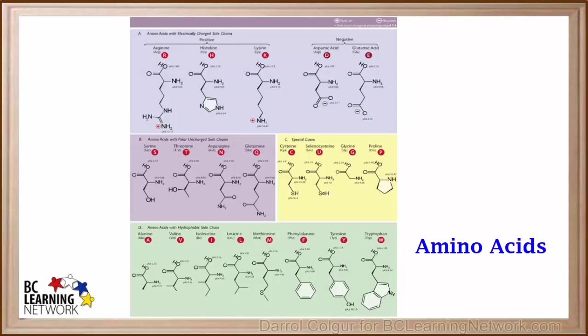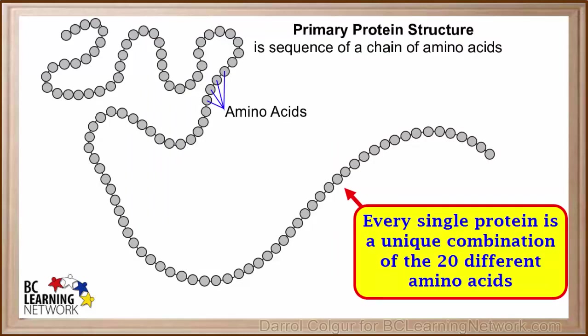Here is a diagram showing the structures of individual amino acids. Every single protein is a unique combination of the 20 different amino acids. In order to function properly, a protein must be assembled with exactly the right combination of amino acids.